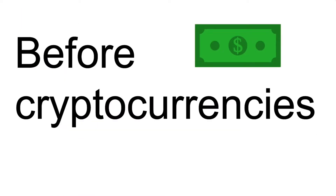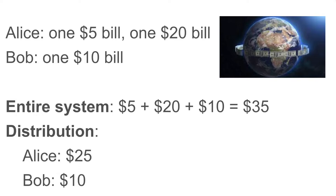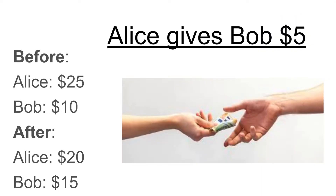Let's think about the world before cryptocurrencies. In this simplified world, let's say we have two people — Alice and Bob — using only dollar bills. Let's say the system has $35 total, with Alice having $25 and Bob having $10. If Alice wants to give Bob $5, then Alice physically hands Bob a $5 bill.